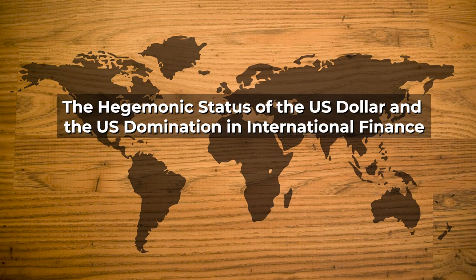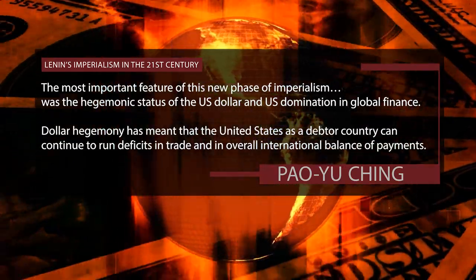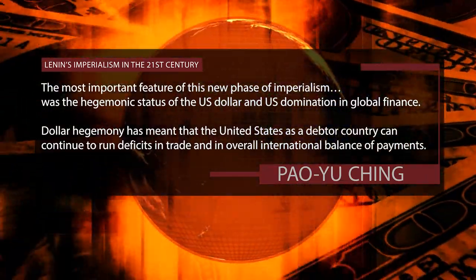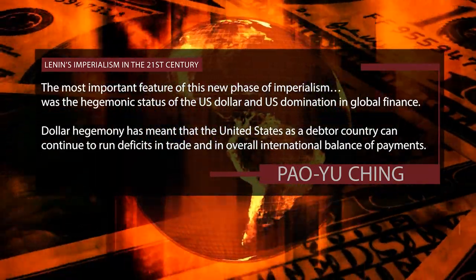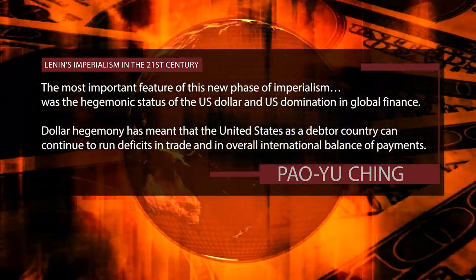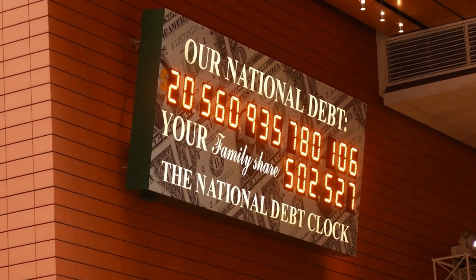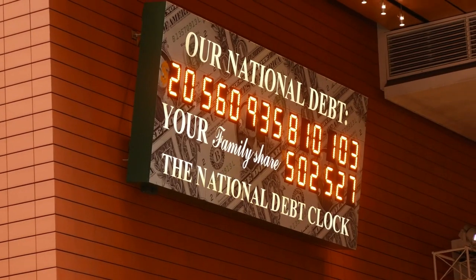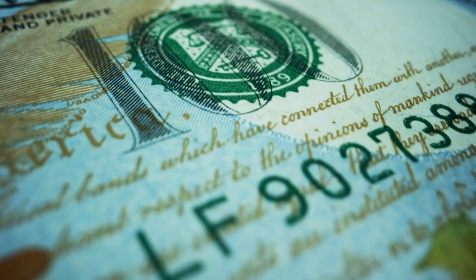The hegemonic status of the U.S. dollar and U.S. domination in international finance. The most important feature of this new phase of imperialism was the hegemonic status of the U.S. dollar and U.S. domination in global finance. Dollar hegemony has meant that the United States, as a debtor country, can continue to run deficits in trade and an overall international balance of payments. As debt piles up in the U.S., the U.S. dollar became the international currency of the world. It is now the medium of exchange, the unit of value, and the store of value for all countries, and it is the main form of foreign exchange reserves in central banks.